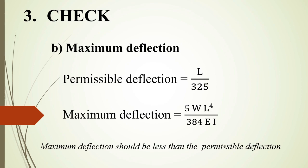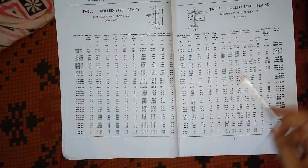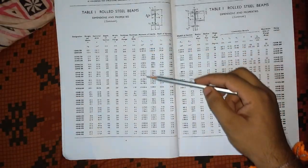We need the moment of inertia I. We note the value of Ixx from SP6 for the selected designation section.